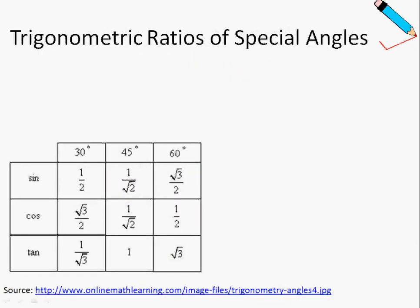More importantly, what we're going to learn today are the trigonometric ratios of special angles. Specifically, we're referring to the angles 30 degrees, 45 degrees, and 60 degrees. In this video, I'll show you the proof for some of the ratios, and I'll also show you how you can read off values from this table.